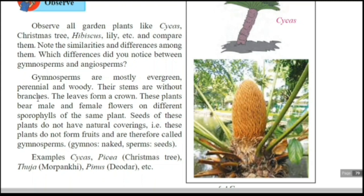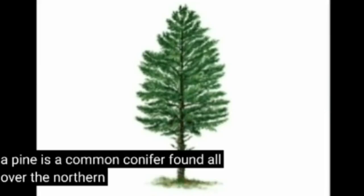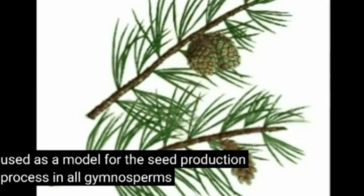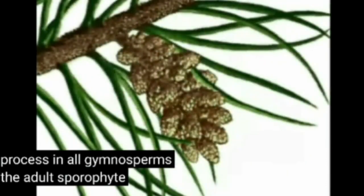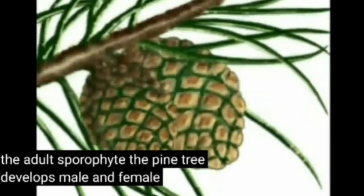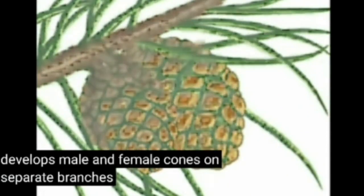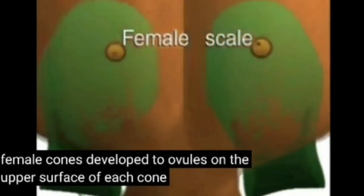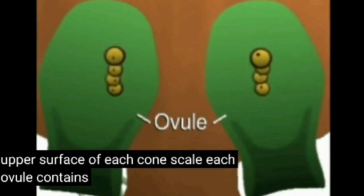These plants bear male and female flowers on different sporophylls of the same plant. A leaf-like structure bears the reproductive organs. Sporophyll means a leaf-like part that bears the reproductive organ or sporangia. Male and female flowers are present on different sporophylls of the same plant — the plant is the same, but the male flower is different from the female flower.